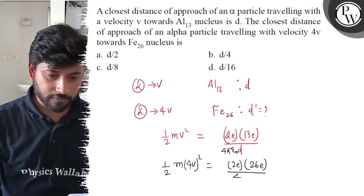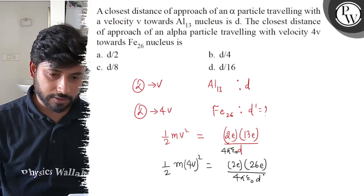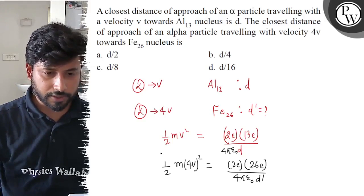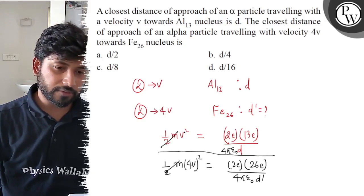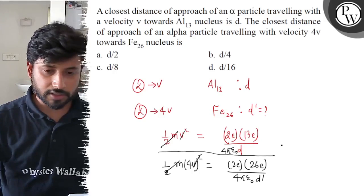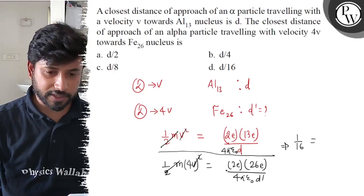If we take both the ratio, m by 2, m by 2 cancel. V square, V square cancel. Left hand side 1 by 16 and right hand side...